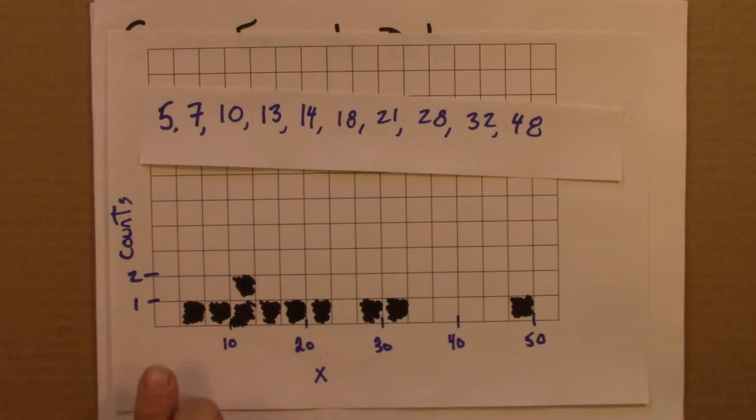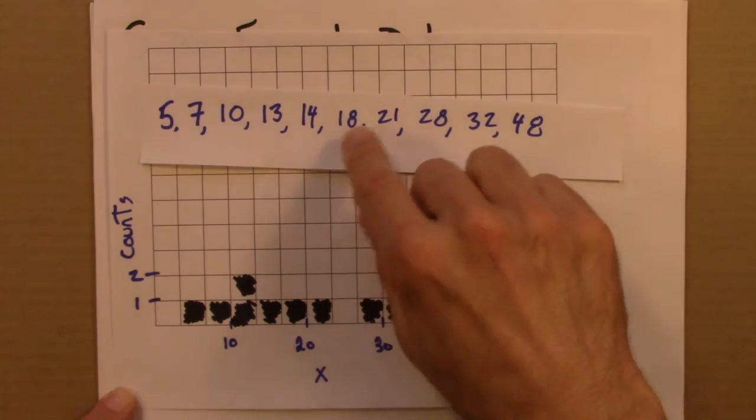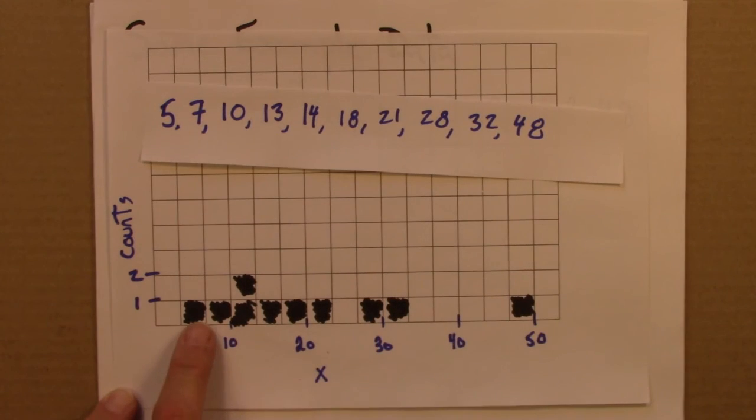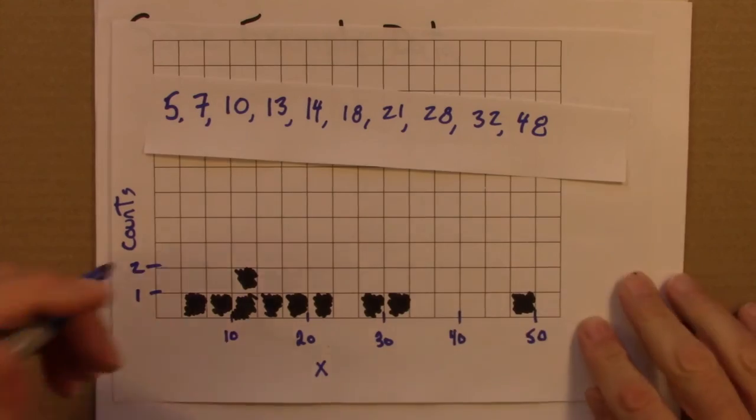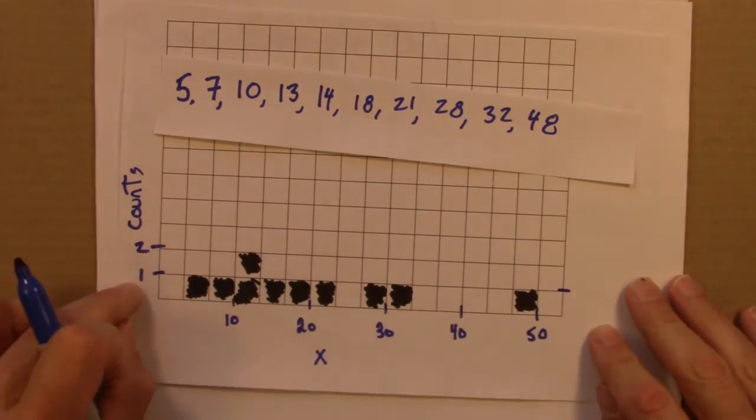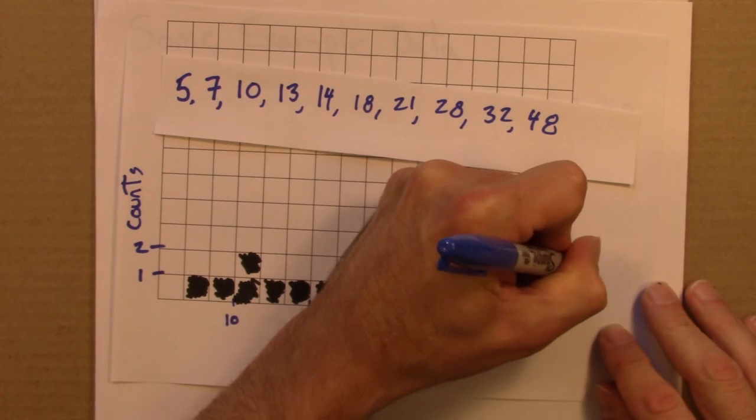You can also interpret it as saying there's a 1 in 10 chance, if I were to draw from this at random, that I would get something in that range, or that simply 10% of the data falls in here. So I could take this, I am dividing by 10, 0.1, 0.2,